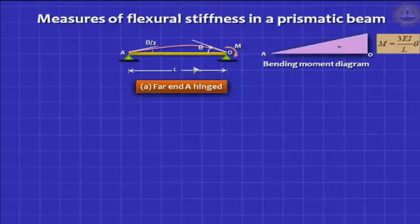And we said there are many ways of proving that the rotation you get theta is related to M. And the relationship is M equals 3EI by L into theta. The bending moment diagram is linear, varying from 0 at the far end A to the maximum value of M at the near end. And you can also prove that the slope you get at the other end is theta by 2.